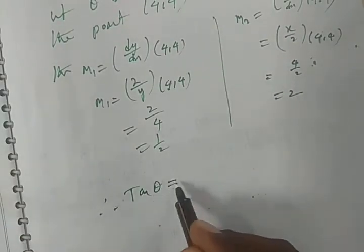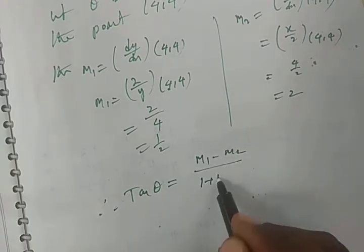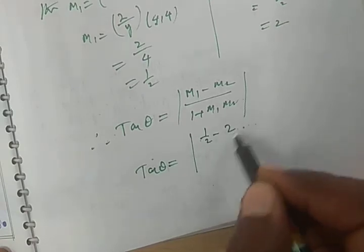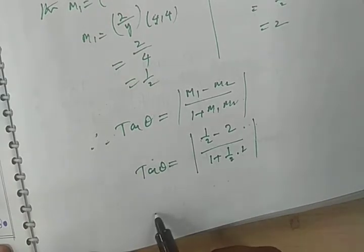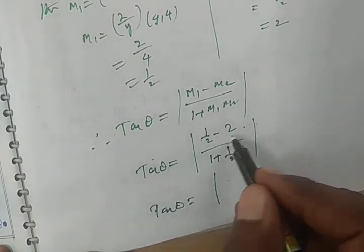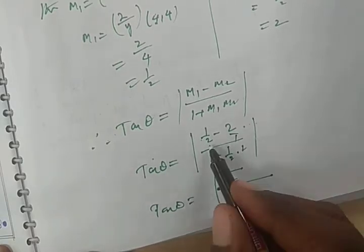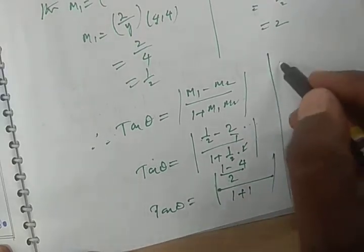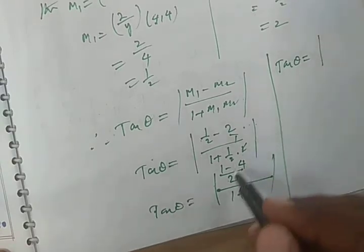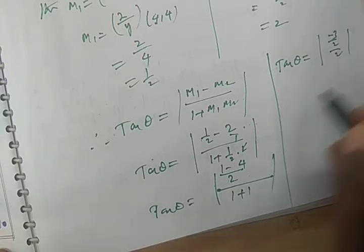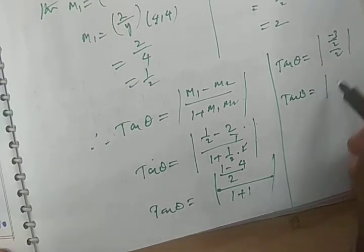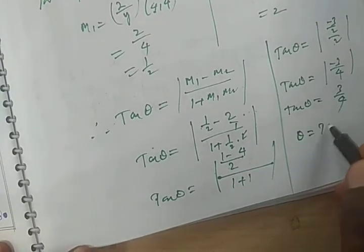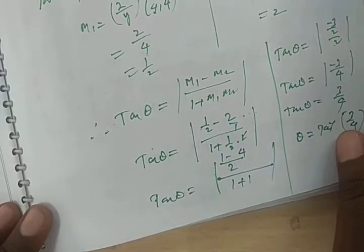Therefore, tan θ = |( m₁ − m₂) / (1 + m₁·m₂)| = |(1/2 − 2) / (1 + (1/2)·2)| = |(−3/2) / (1 + 1)| = |(−3/2) / 2| = 3/4. So tan θ = 3/4, which gives θ = tan⁻¹(3/4).